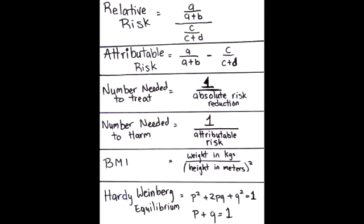Rapid Review. What is the equation for relative risk? The equation of relative risk is A divided by A plus B over C divided by C plus D.